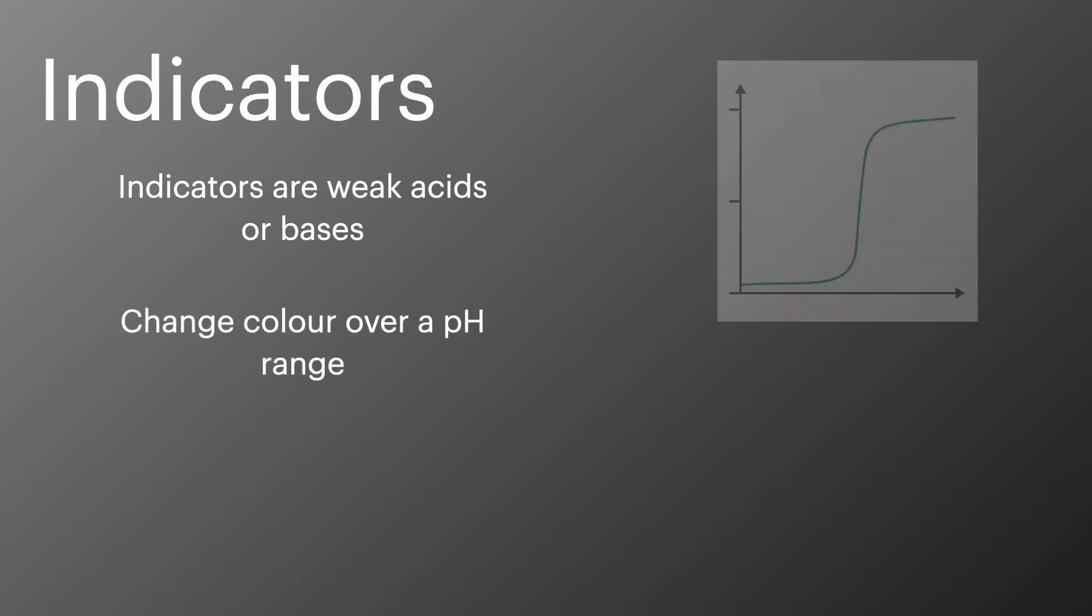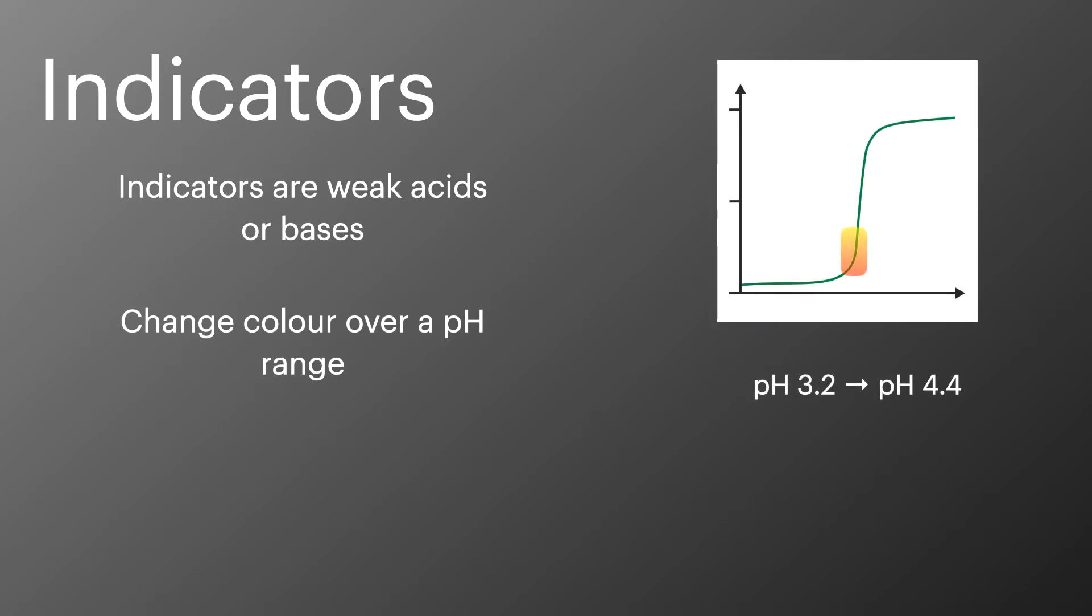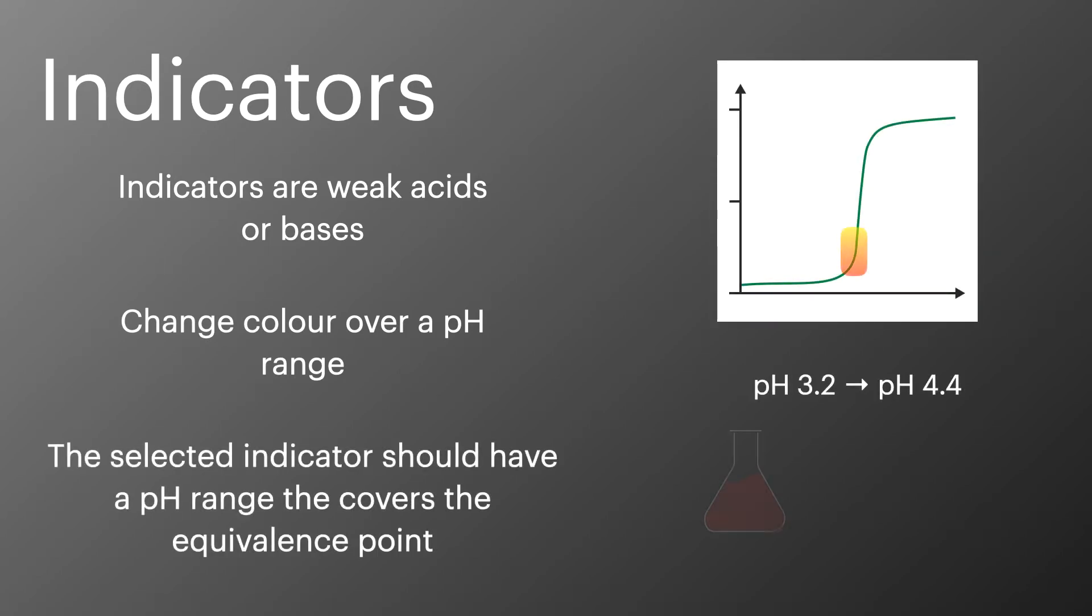Indicators don't change colour at a single pH value but instead change colour over a pH range. To ensure that we have the correct indicator for a neutralisation reaction we want to select an indicator that has a range that is within the equivalence point.